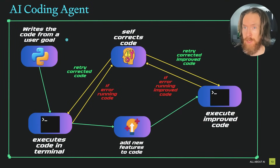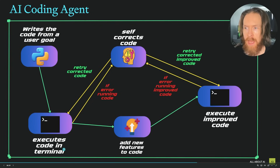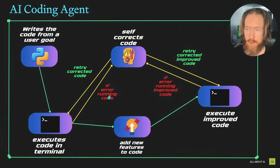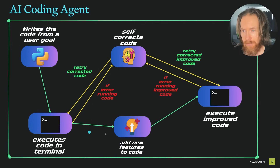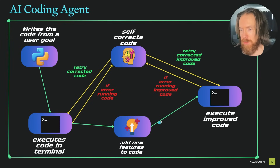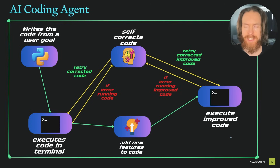Here you can see a very simplified version of how this works. The user sets a goal — what kind of app they want — and the coding agent writes that app. It tries to execute the code in the terminal, and if there's an error, we send it to the self-correcting part, which takes the error message, self-corrects, and tries again. If it works, we run the code and then try to add new features, executing again with the same error-correction loop.